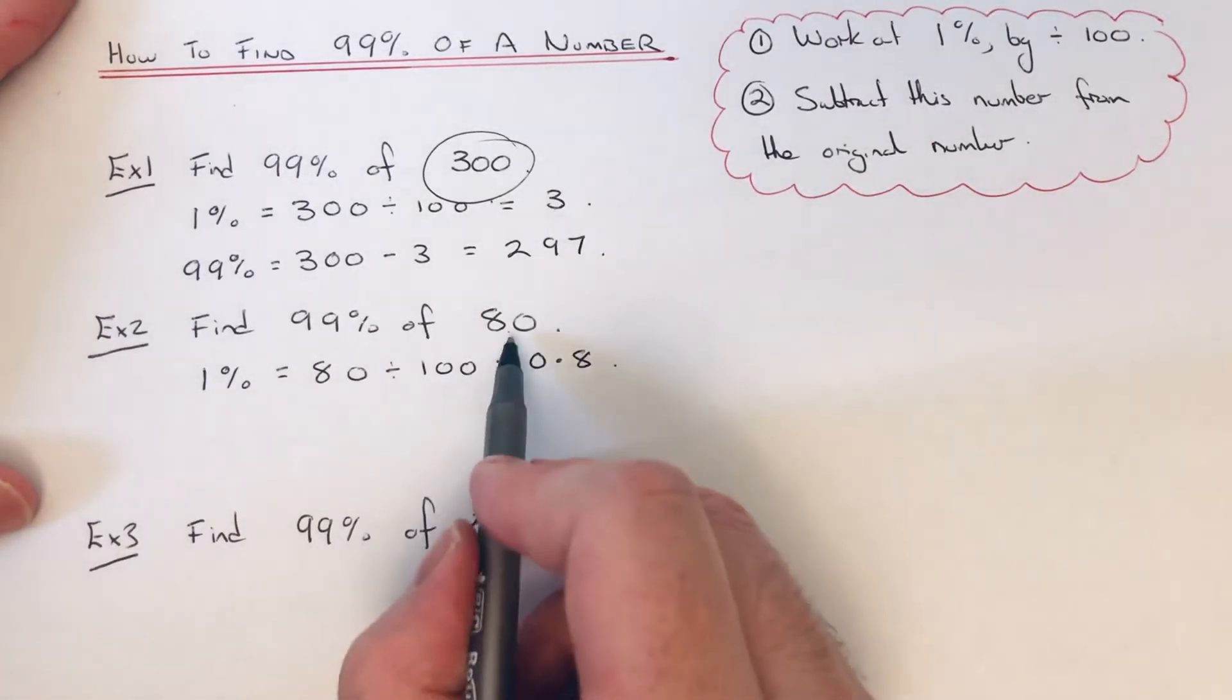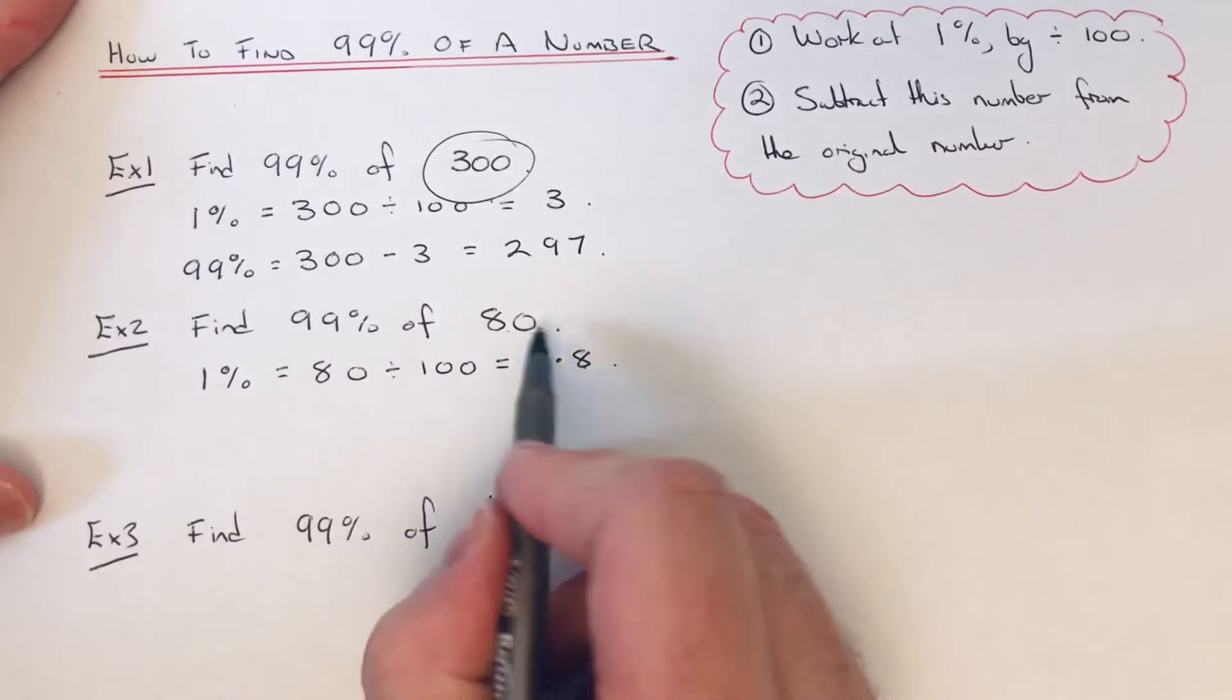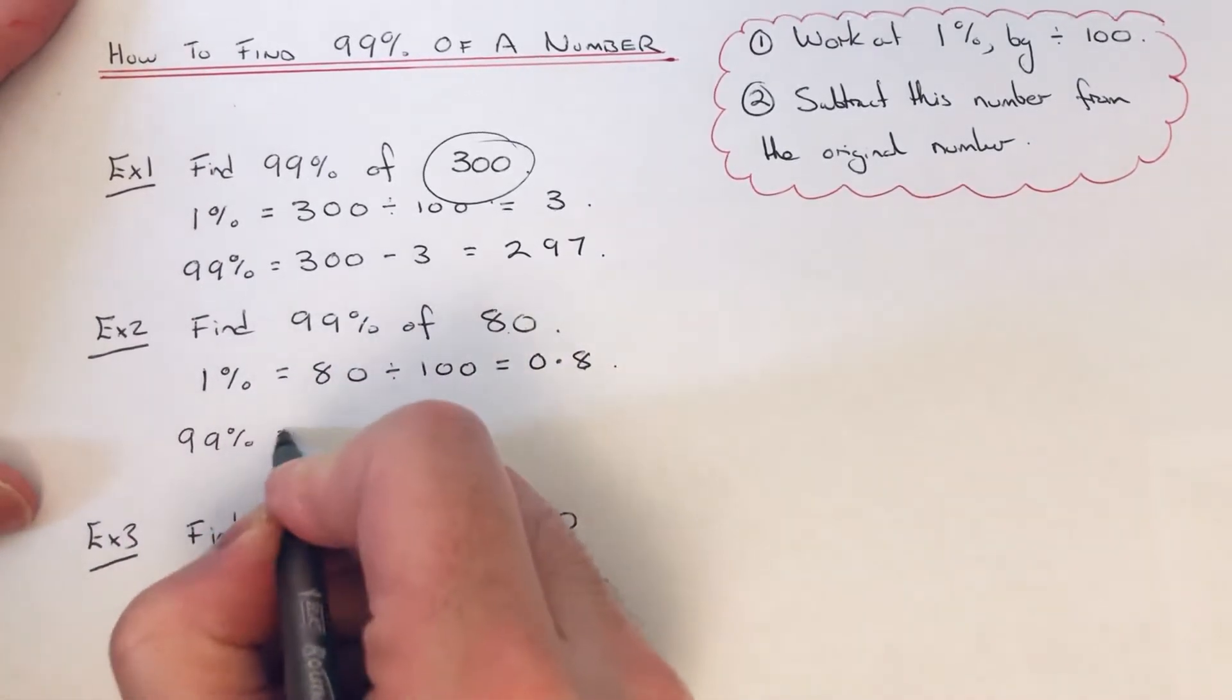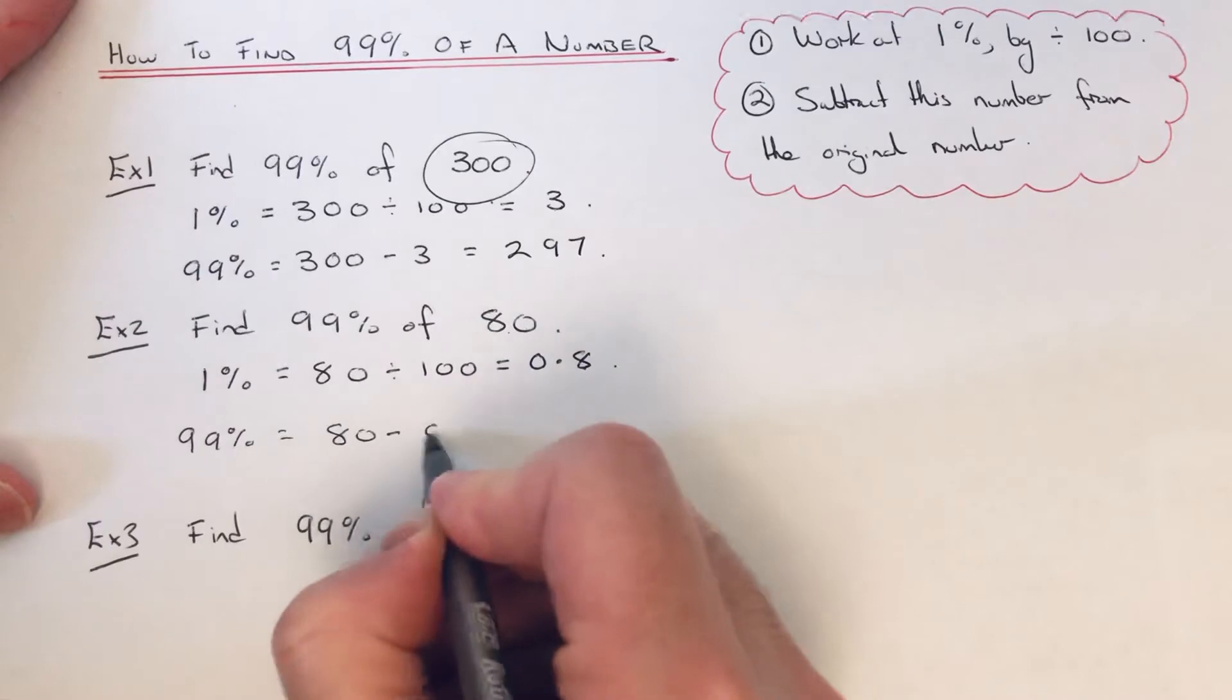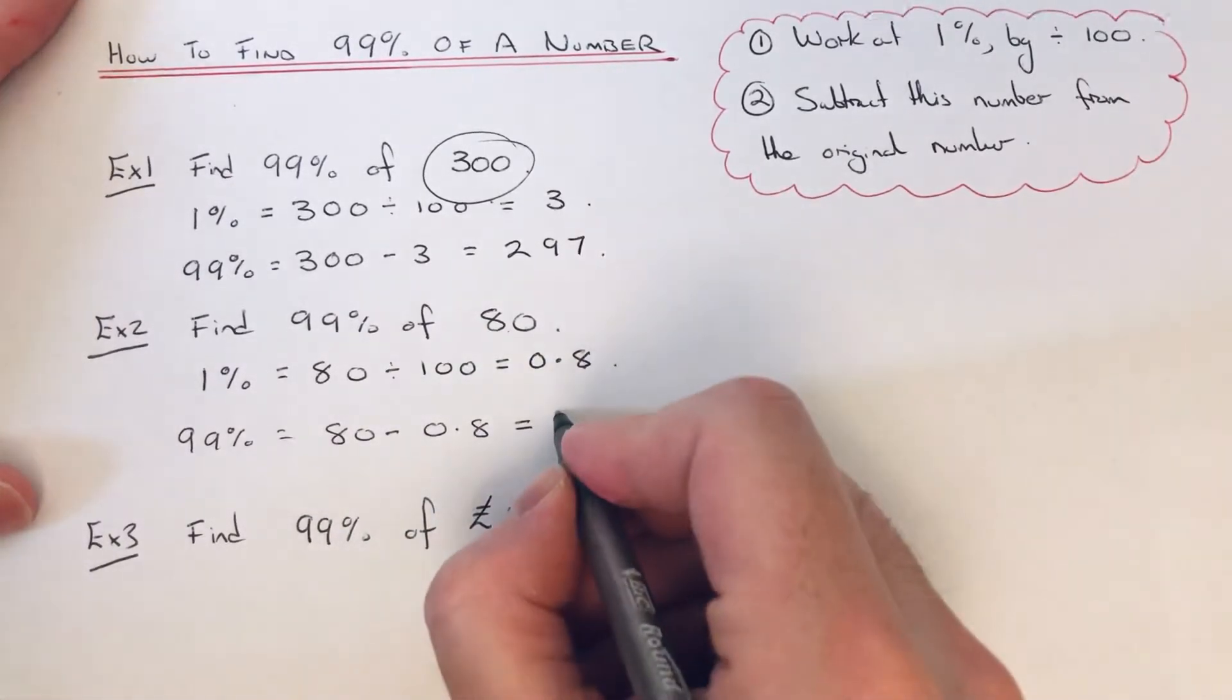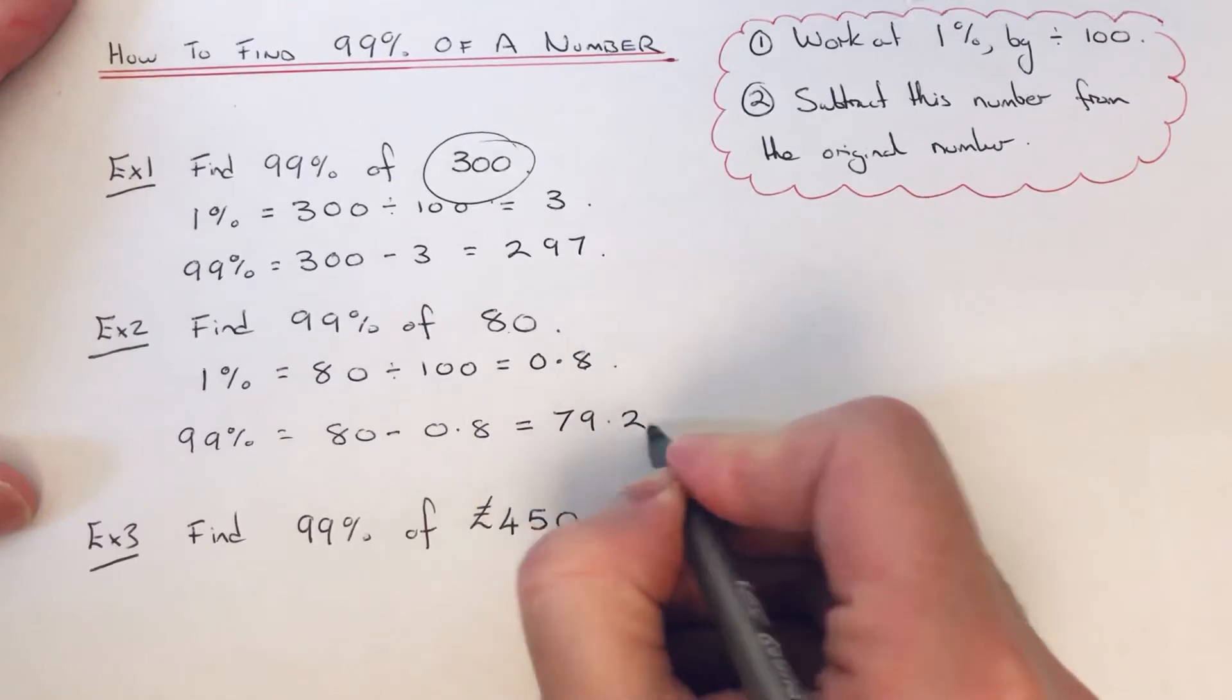And then we just need to subtract that answer away from the original number to give us 99%. So 80 take away 0.8, so that will give us 79.2.